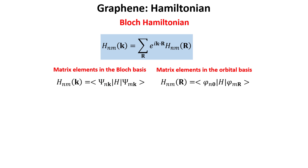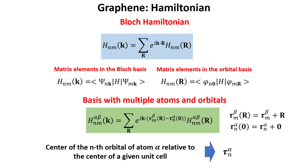Before proceeding further, we have to generalize the relation between the Hamiltonian elements in the Bloch and orbital basis. The highlighted relation discussed in previous videos was obtained for a crystal with a basis containing a single atom. Now we need to generalize it for a crystal with a basis containing multiple atoms, to be able to compute the Bloch Hamiltonian for graphene. The most general relation for a system containing multiple atoms in the basis is highlighted in the green box. Note that Greek letters label the sublattice type and Roman letters label the orbital type. The key difference is that the exponential term inside the summation contains the distances between every pair of atoms and orbitals possible, rather than just the lattice vector R. The important new quantity introduced is the center of the n orbital of a given atom in a given unit cell, which we represent by a vector tau.